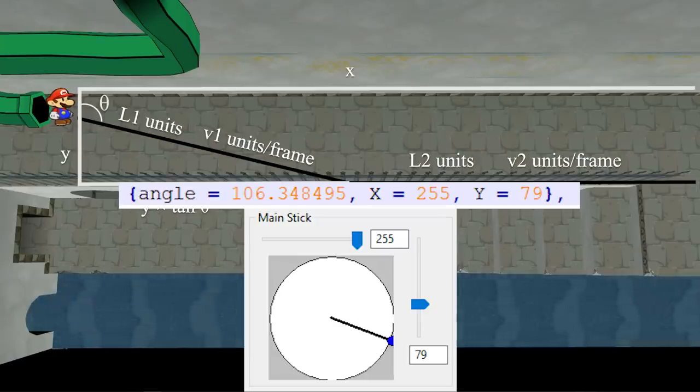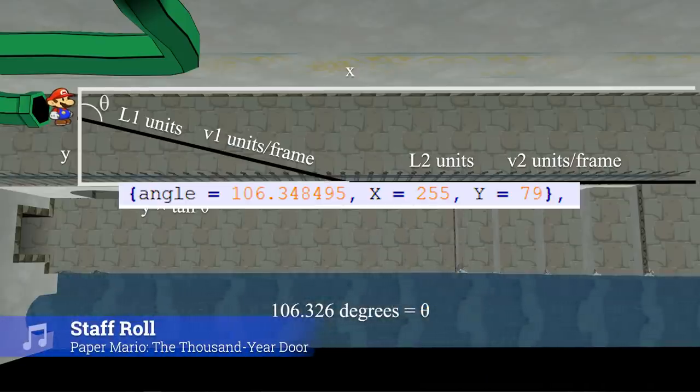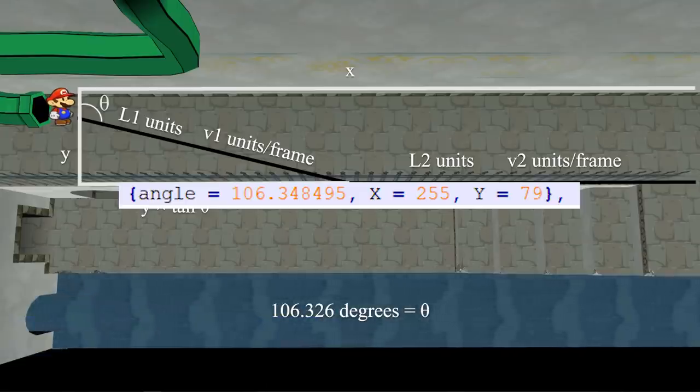Wait a sec, this looks kind of familiar. This is exactly identical to the optimal analog stick angle for wall boosting, either by sheer coincidence or something. I'm not really sure. What I do know is that through the use of calculus, we were able to conclude what the fastest movement for this section of the TAS is.